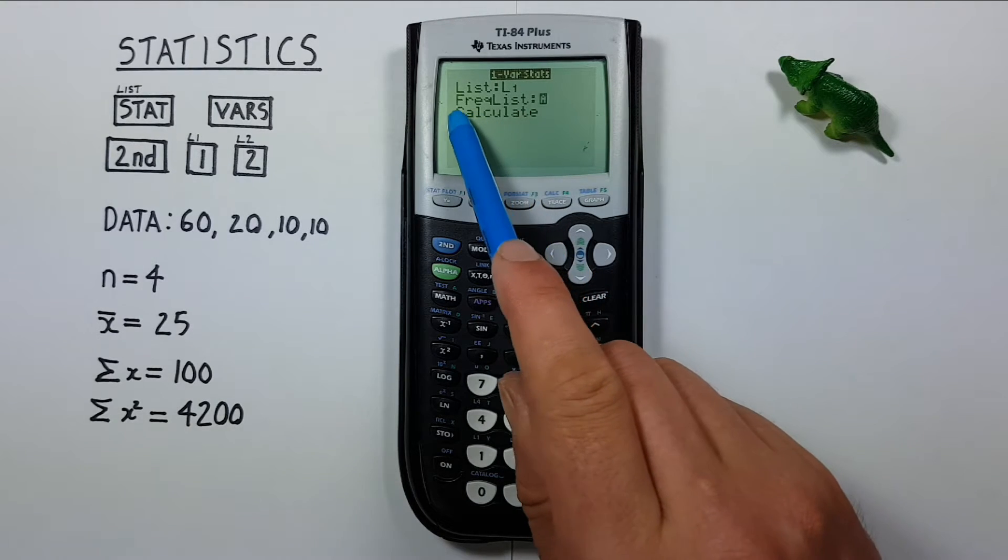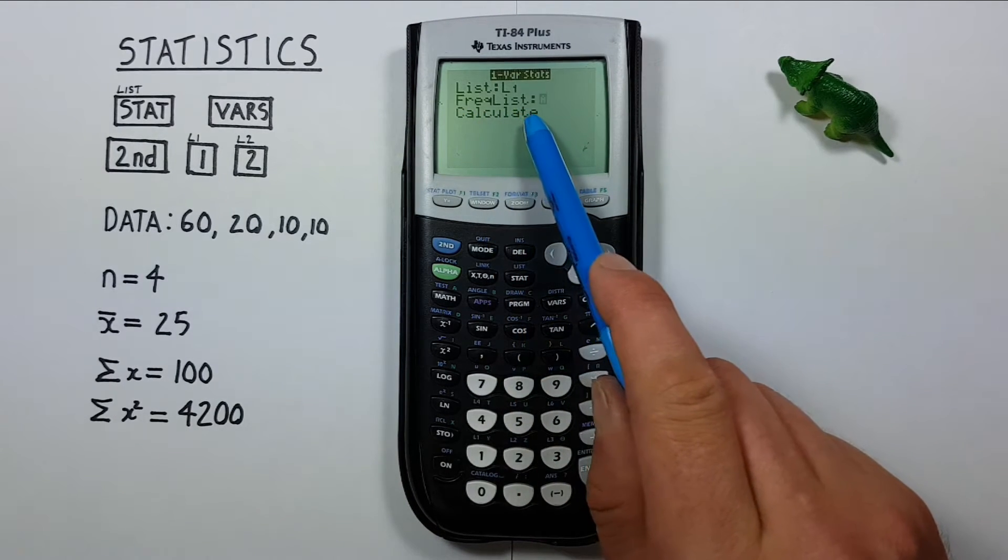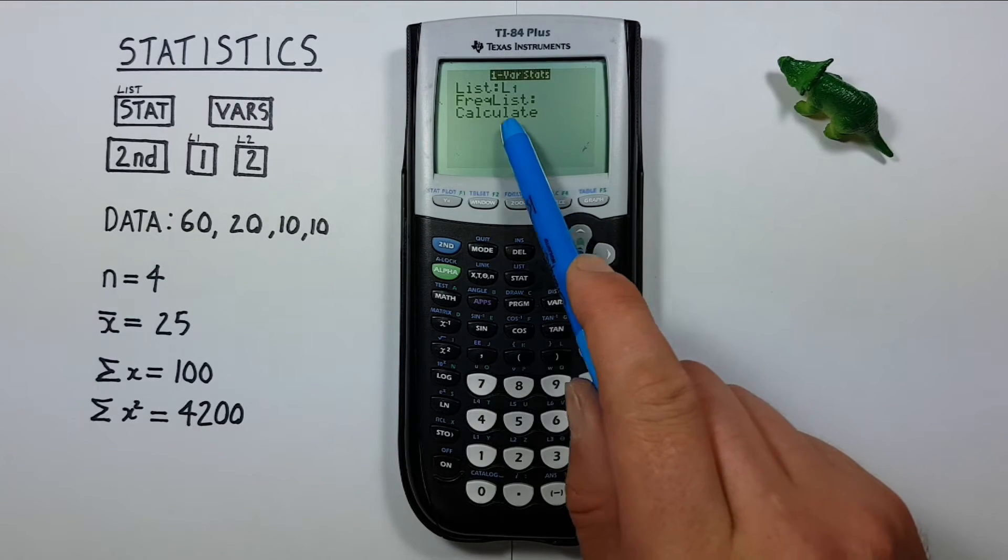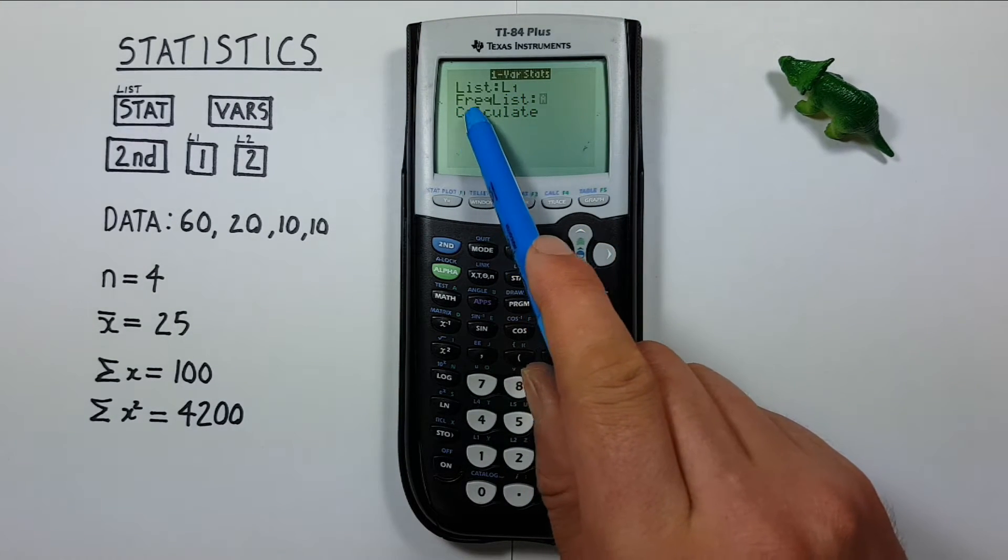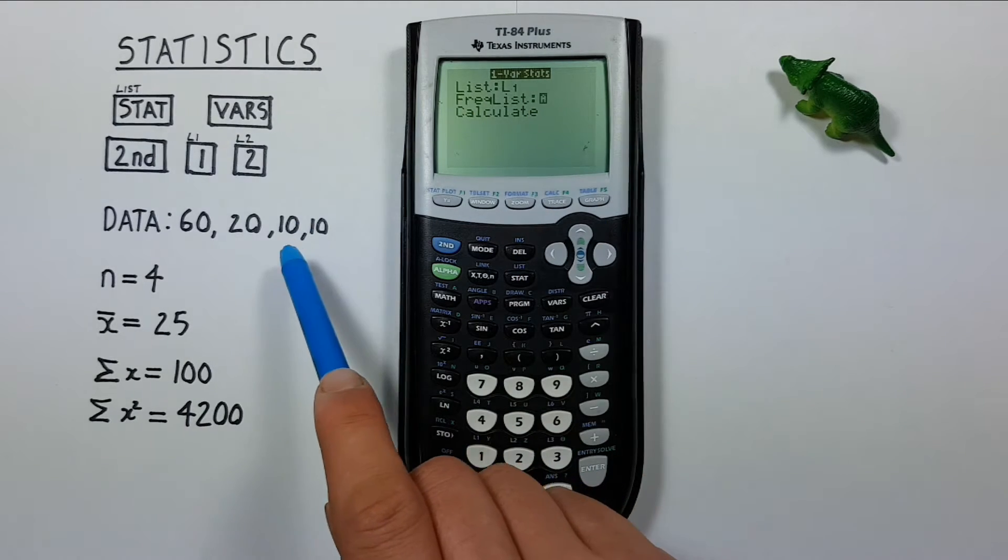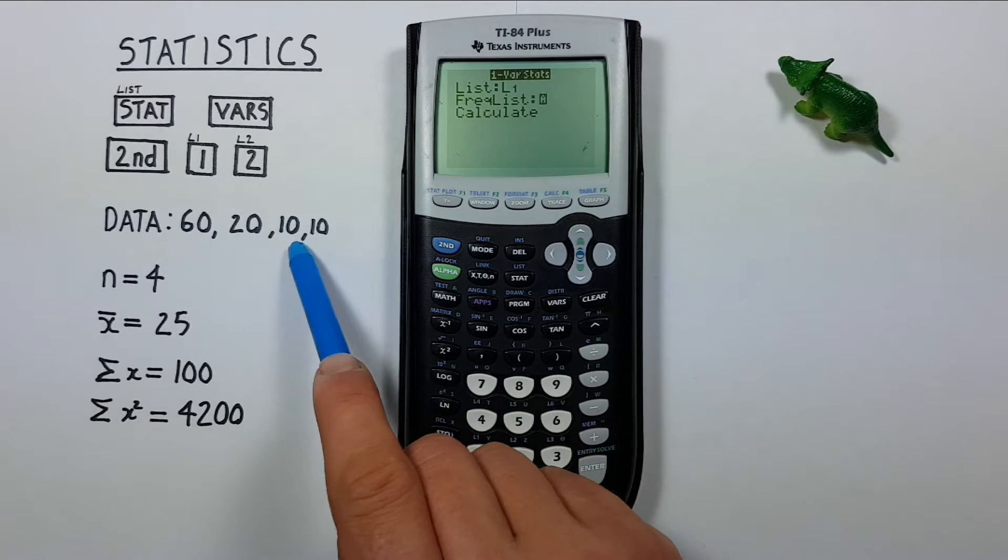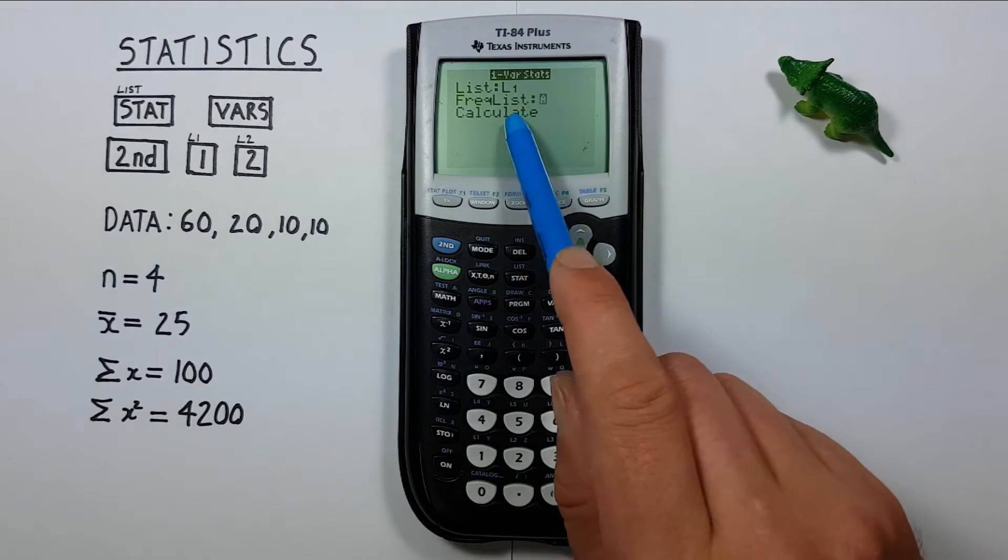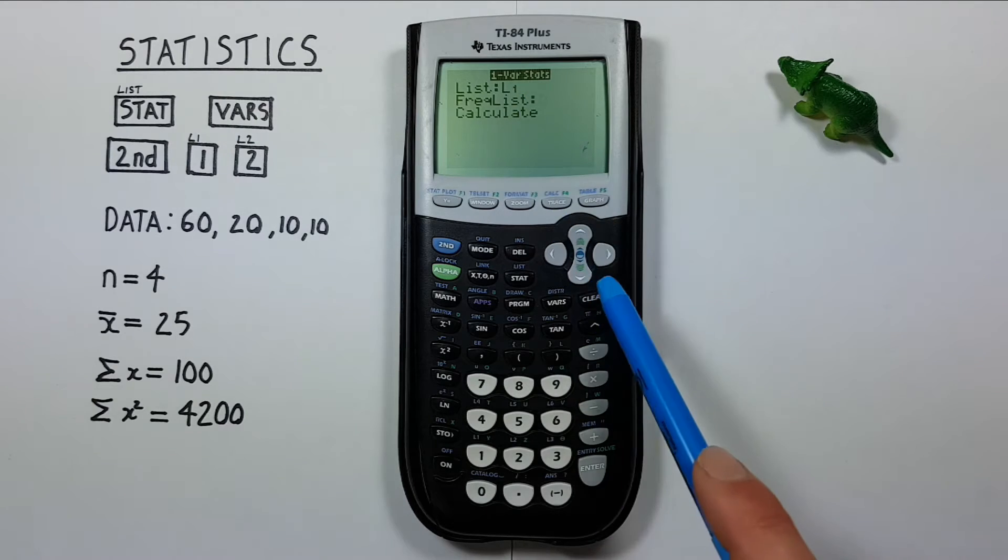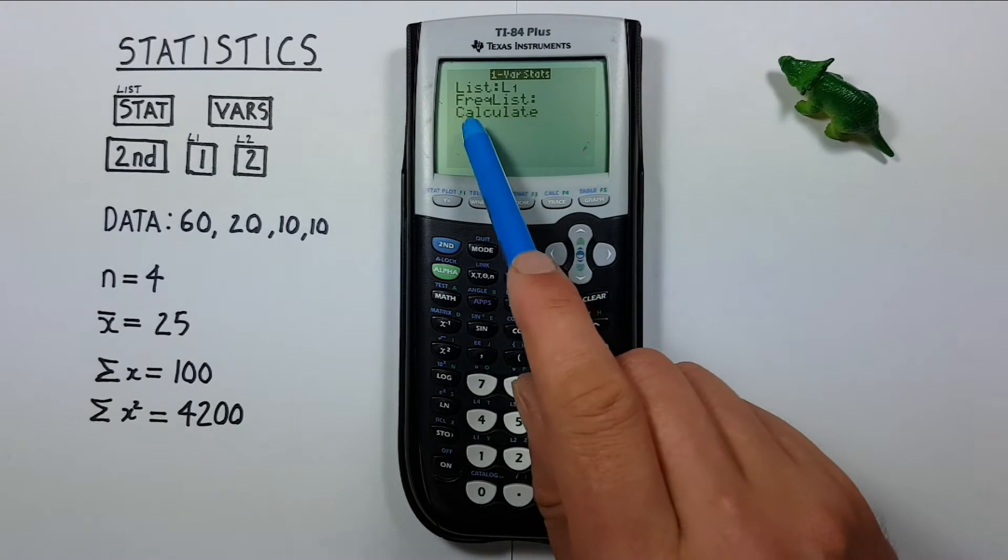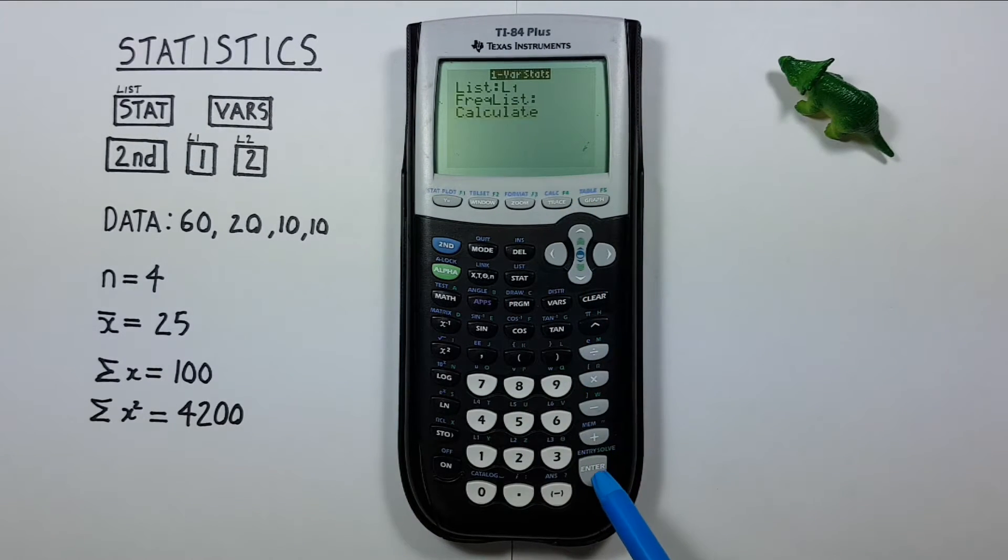Scroll down. Next is our frequency list. We don't need to use this because we entered our entire data set into L1. If we have many of the same number, like say we have a lot of tens, we can enter a frequency so that we don't have to type them all out. And I'll look at that later in the example. For now we'll leave it blank. So we scroll down to calculate and press ENTER.